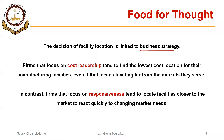For example, if an organization is focusing on cost leadership — that is, it is a low-cost provider — then its focus will be to find the lowest cost location for manufacturing facilities, even if that means locating far from the markets. In contrast, firms that focus on responsiveness tend to locate facilities closer to the market to react quickly to changing market needs. In this case, they might choose a facility closer to the customer, which will be more expensive, but in order to achieve responsiveness, they can go for relatively expensive facilities.